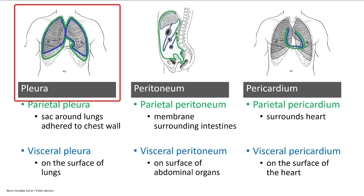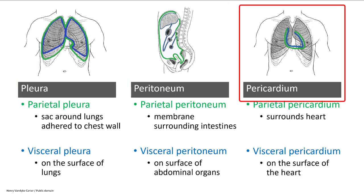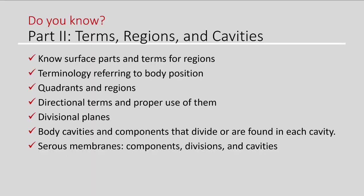We see serous membranes around the lungs, known as the pleura; around the intestines, known as the peritoneum; and around the heart, known as the pericardium. Notice each one has in blue the visceral layer, which is touching the organ itself, whether it be the lungs, intestines, or heart, as well as the parietal layer, which is touching the inside of the body wall or body cavity.